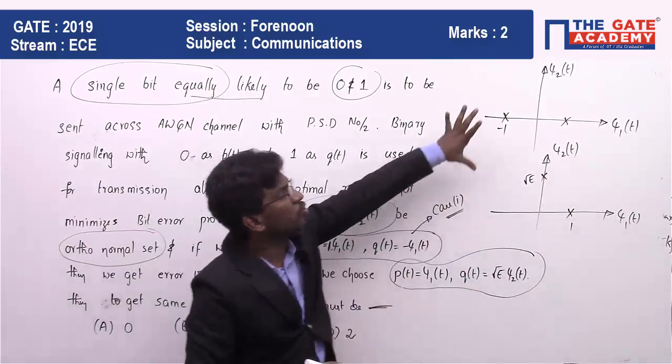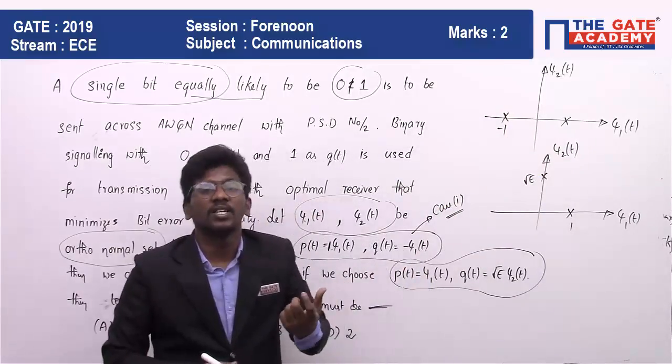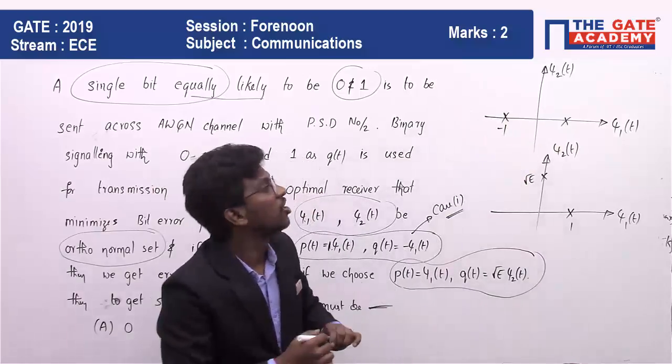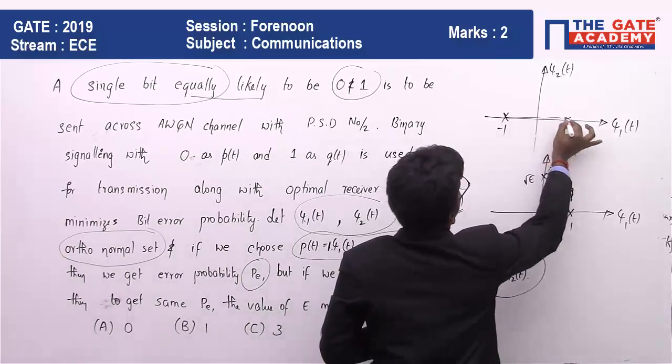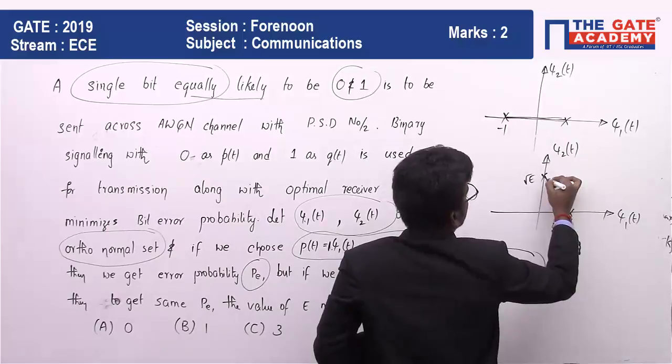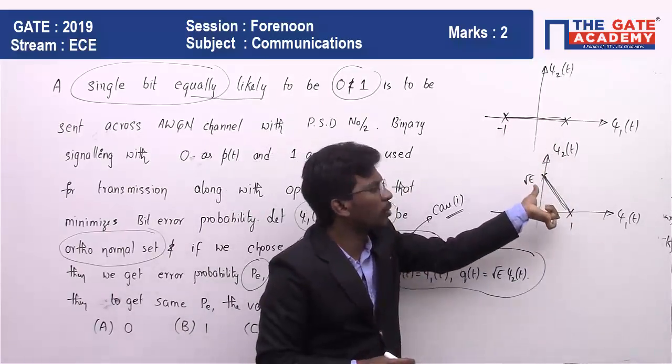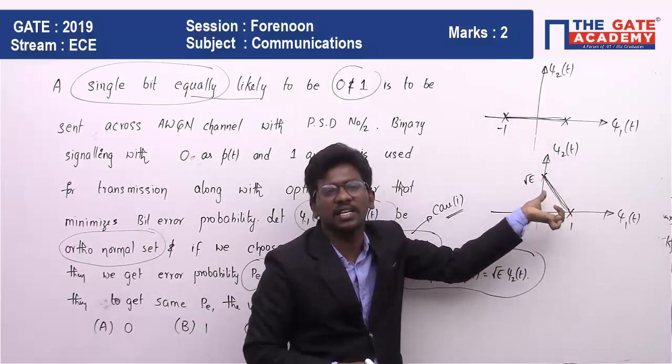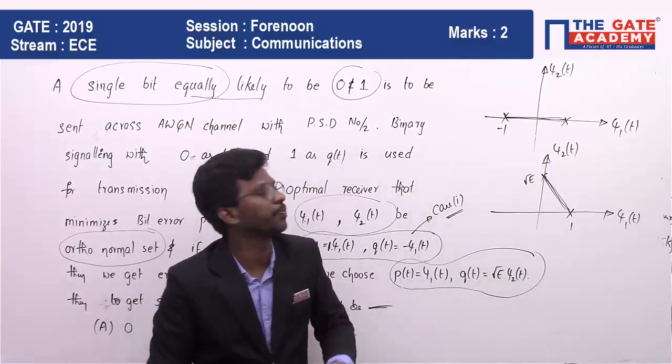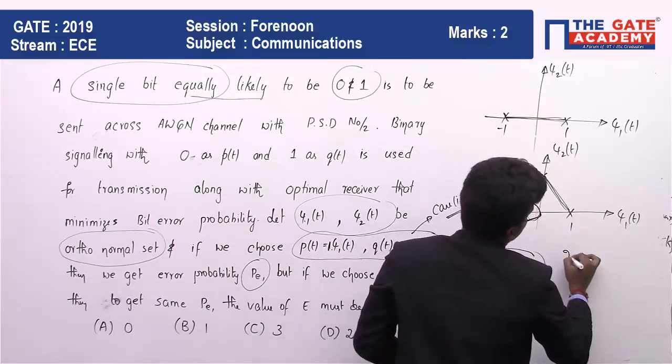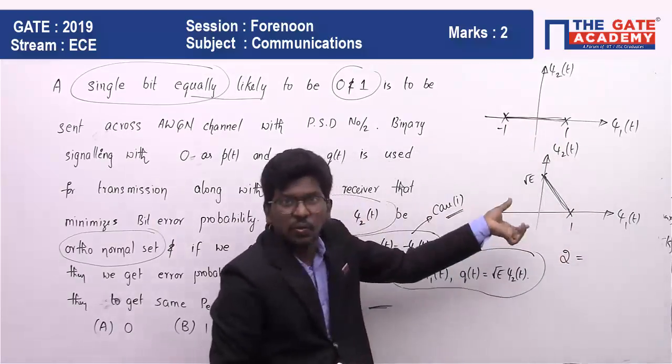These two must be having the same probability of error. We know when two constellations will have the same probability of error: when the distance between those two points are the same. The distance between these two in case 1 is 1 and -1, so the distance is 2.